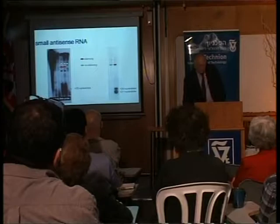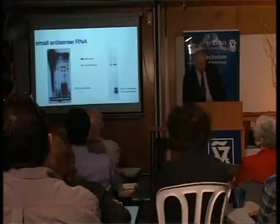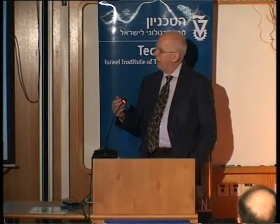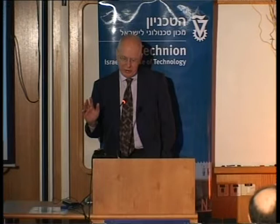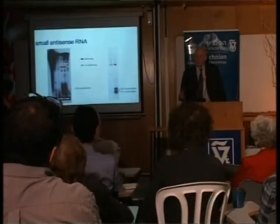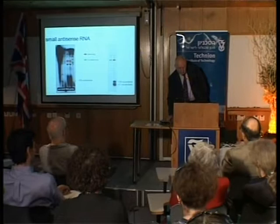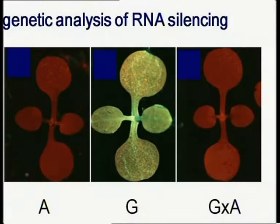Andrew did some experiments using RNA protection assays. His early results showed these were plants that were silencing a transgene, and we had antisense RNA corresponding to the transgene that was around 25 nucleotides long, and only present in plants that were doing the silencing—not in plants that were not silencing. Andrew then worked on making the results cleaner using northern blotting, and found that the RNA molecules involved came in different size classes: 21 nucleotides and 24 nucleotides. Again, they were only present in plants that were doing the silencing.